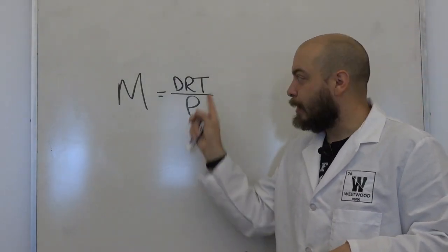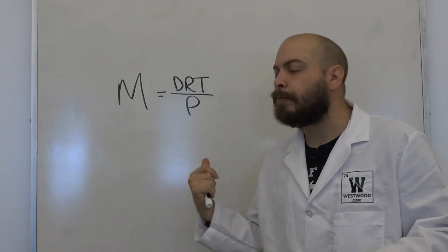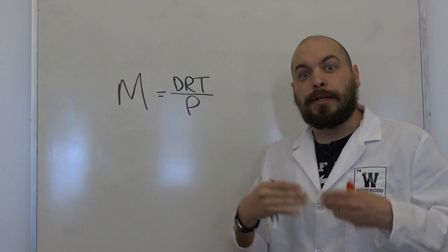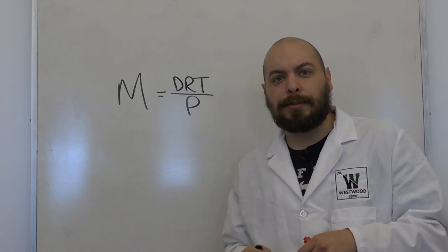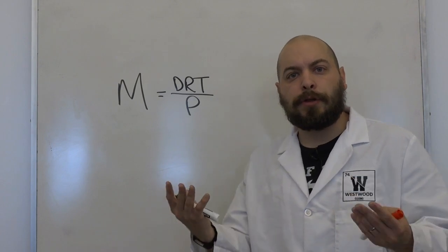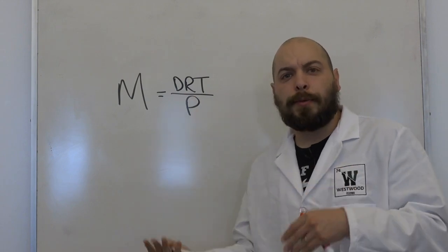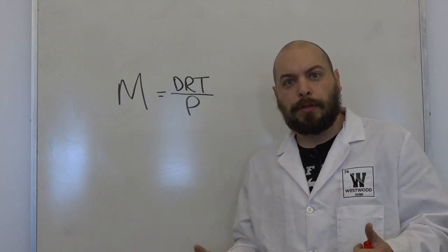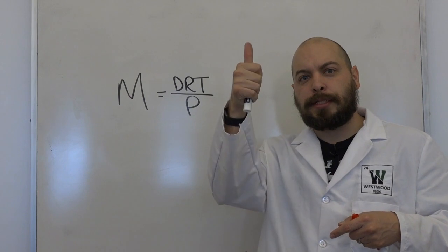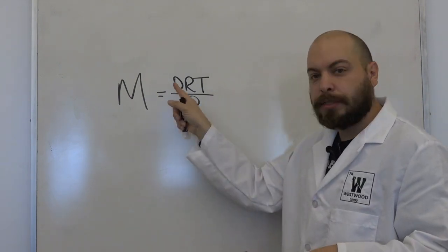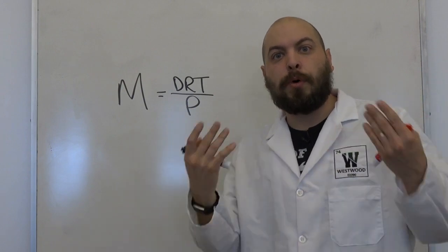The next equation we need to discuss is not given to you — it's actually derived, and we'll talk in class about how. The idea is that we can connect density, a variable we haven't yet discussed. Density of a gas is important because gases have both mass and volume, and density is mass divided by volume. So density must be connected to both temperature and pressure. This makes sense: hot air balloons rise because they're less dense, meaning as temperature goes up, density goes down — temperature and density are inversely related.